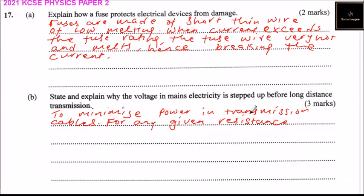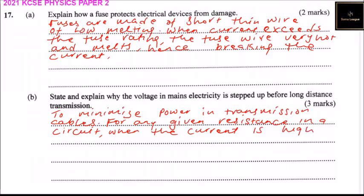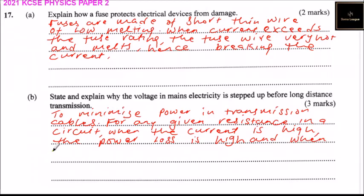For any given resistance in a circuit, when the current is high, the power loss is high. And when current is low, the power loss is low.